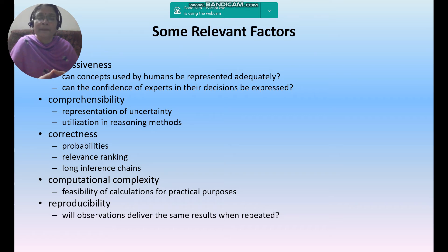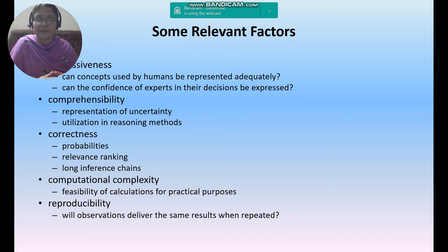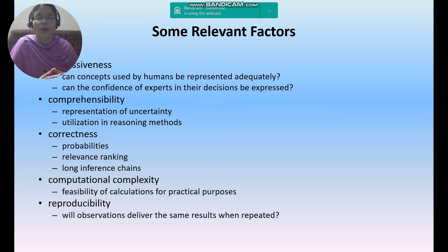Comprehensibility covers representation — whether in the form of text or a diagram — whatever form you use to represent the uncertainty, and its utilization in reasoning methods. Among the many methods, you use only some. The next one is correctness, which comes under probabilities — relevant ranking, long inference chains. Computational complexity refers to the feasibility of calculations for practical purposes — only feasible calculations can be applied to practical applications.